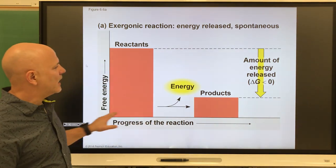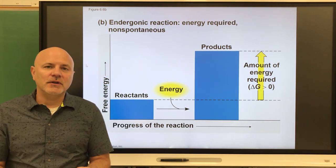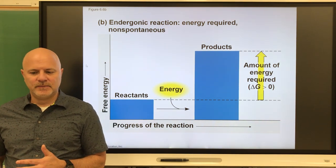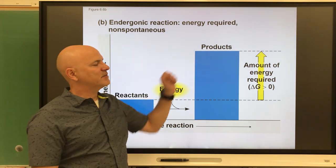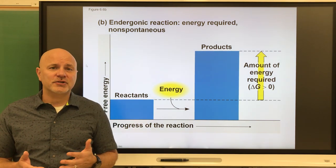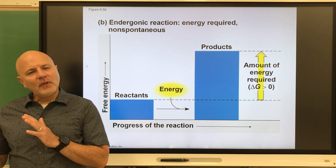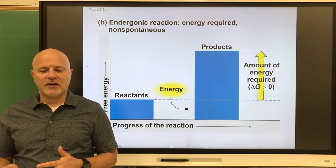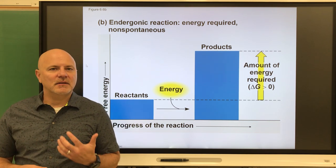Endergonic reactions are energy-requiring chemical reactions where you must constantly add energy for the reaction to occur: A + B + energy produces C + D. Here the reactants have less potential energy than the products. This is what we see with photosynthesis — taking carbon dioxide and water, which have low potential energy, and making glucose, which has high potential energy. The metabolic equivalent is anabolic reactions — metabolic reactions that synthesize molecules, which in most cases require energy.